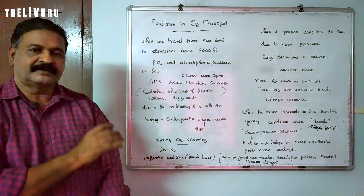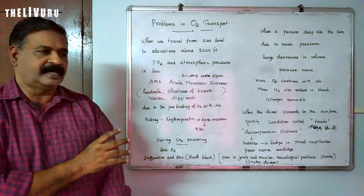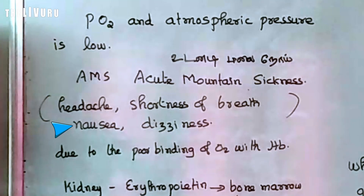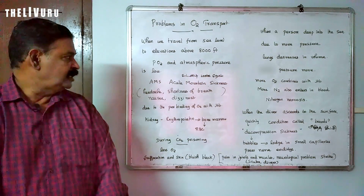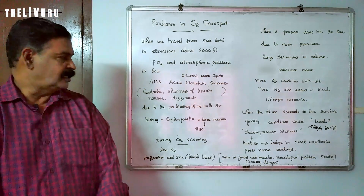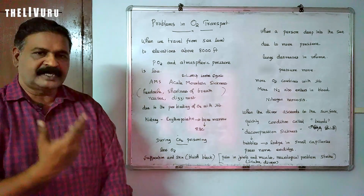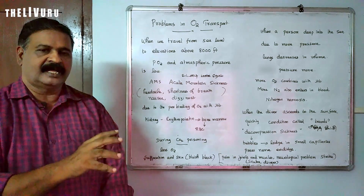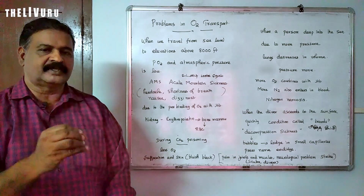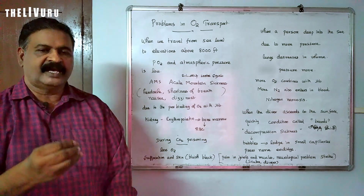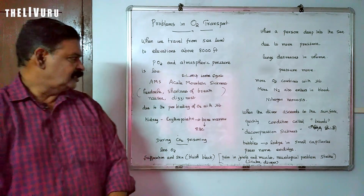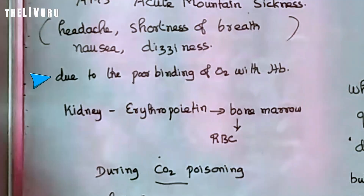What are the symptoms? Headache, shortness of breath, nausea, dizziness — urge to vomit. These symptoms occur due to poor binding of oxygen with hemoglobin.